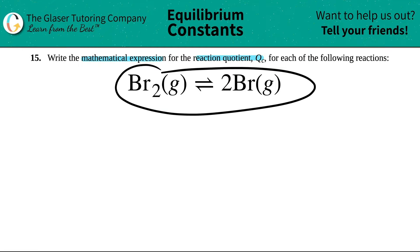So we just have to write the Qc for this formula. I got Br2 gas, which will come to equilibrium, or yield and produce 2Br, which is a gas.